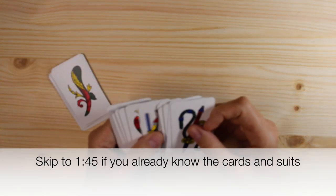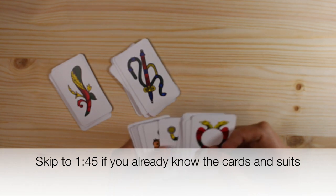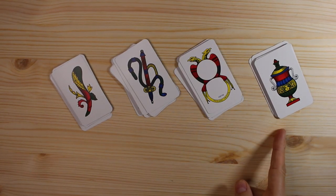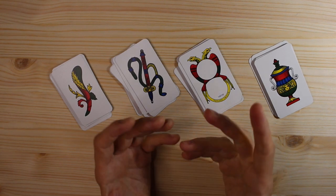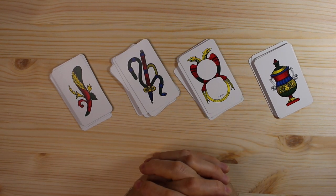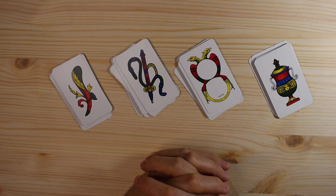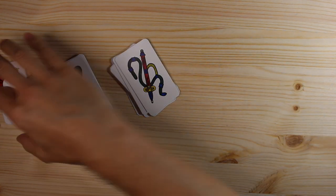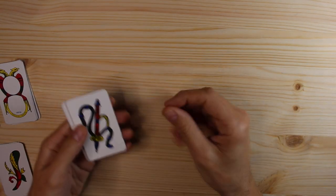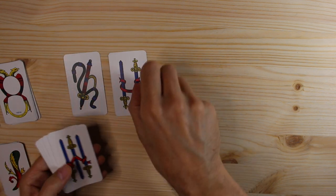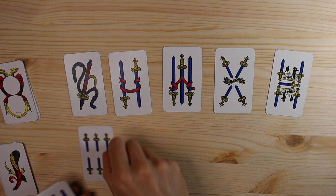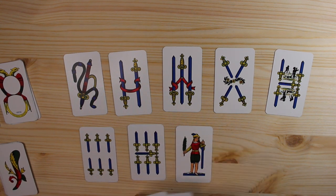You have four suits which is bats, spades, suns and cups. These are the four suits in Italian cards which would be the equivalent of clovers, diamonds, spades and hearts in American cards. Now unlike American cards, every suit only has 10 cards instead of 13.